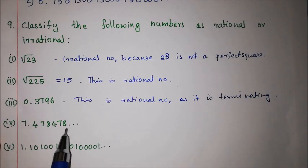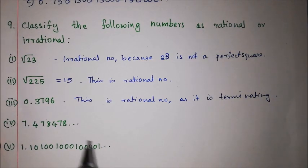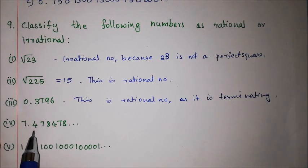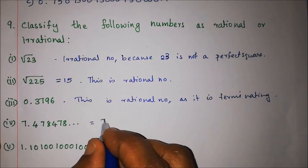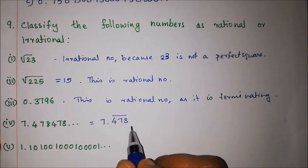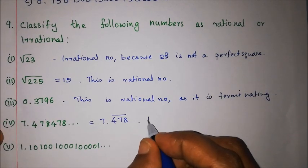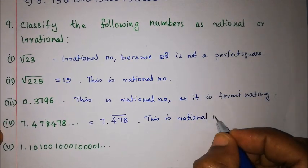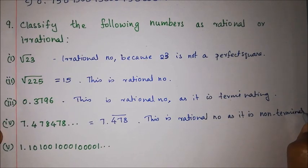The next number is non-terminating. It has a recurring pattern — 7.478478... repeating — so it is a rational number because it is non-terminating but recurring. A recurring decimal always represents a rational number.